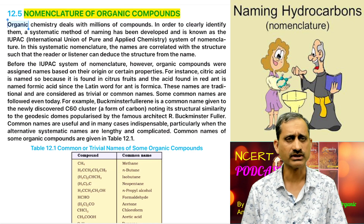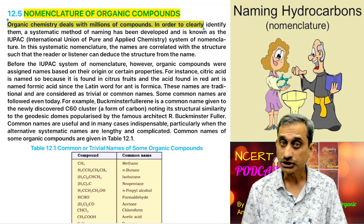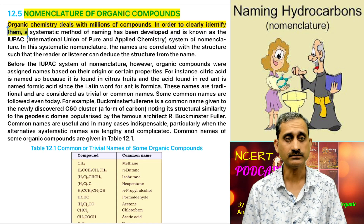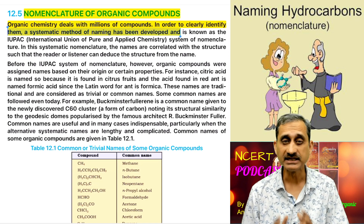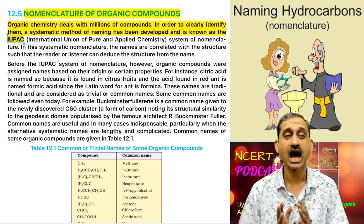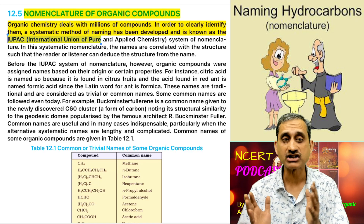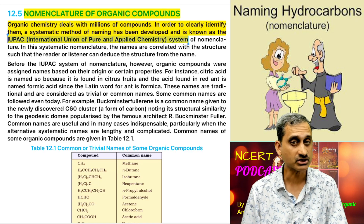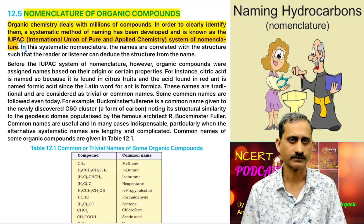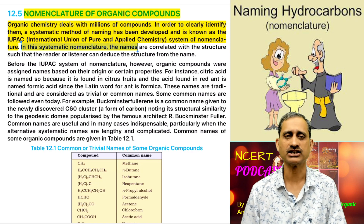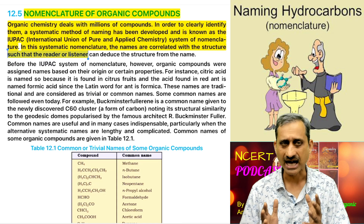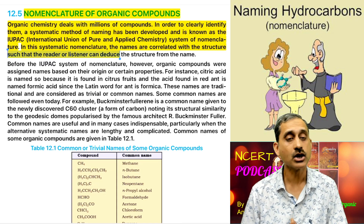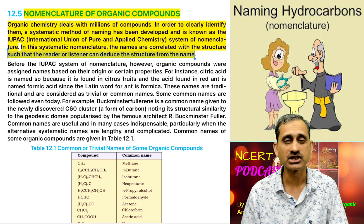Organic chemistry deals with millions of compounds. In order to clearly identify them, a systematic method of naming has been developed and is known as the IUPAC — International Union of Pure and Applied Chemistry — system of nomenclature. In this systematic nomenclature, the names are correlated with the structure such that the reader or listener can deduce the structure from the name.